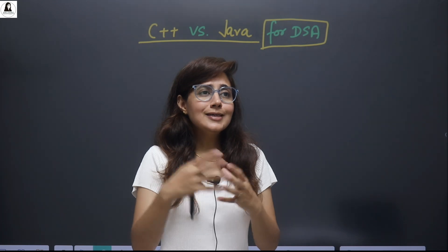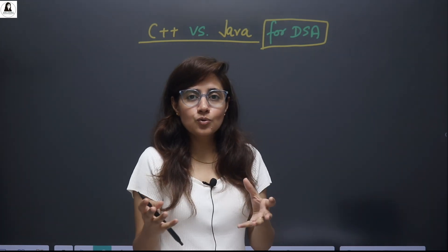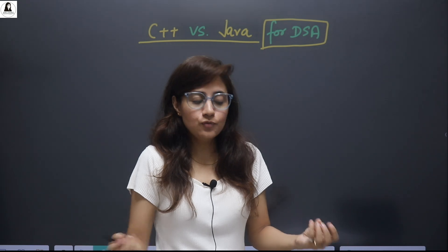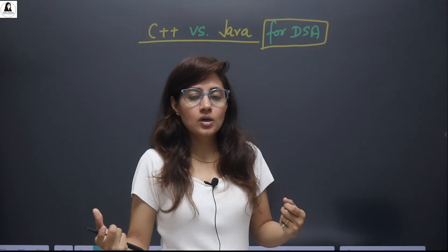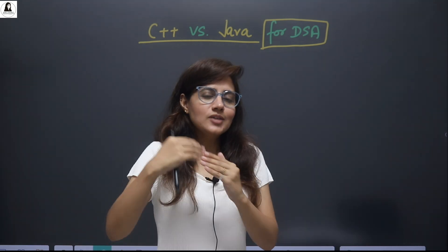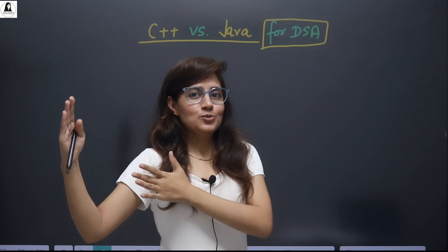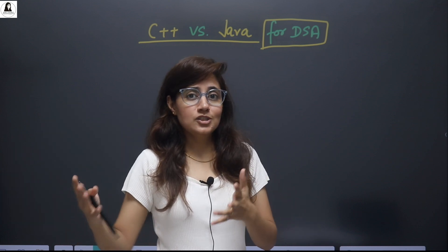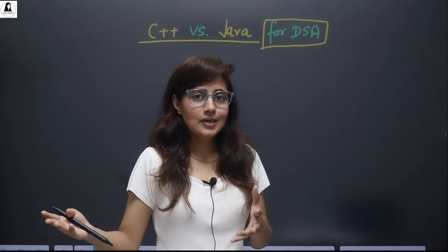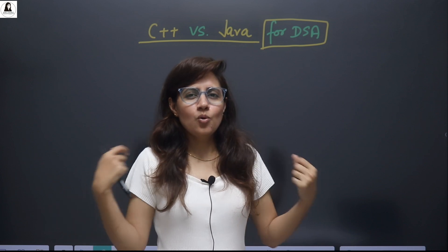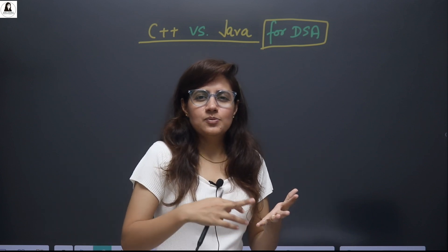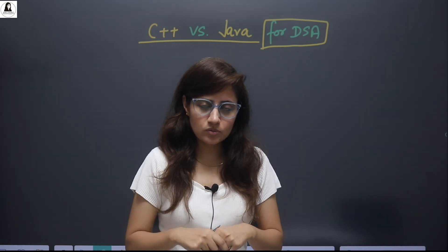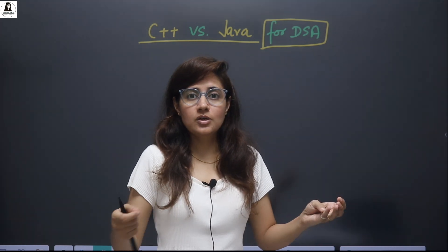You can even learn DSA concepts in pseudocode — you don't need to write proper code in any language if you just want to understand the concepts. But if you are going to implement those concepts, then you definitely need a language: C, C++, Java, or Python. The most commonly used languages are C++, Java, and Python. Most students are confused about which one to choose.